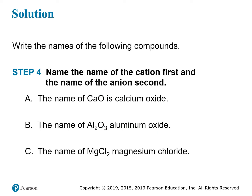Now that you have the names of both the cation and the anion, you just put them together. CaO is calcium oxide, Al2O3 is aluminum oxide, and MgCl2 is magnesium chloride. Very simply, you're just naming the ions in the formula — no reference to charges, no reference to the number of particles. Just name the two ions.